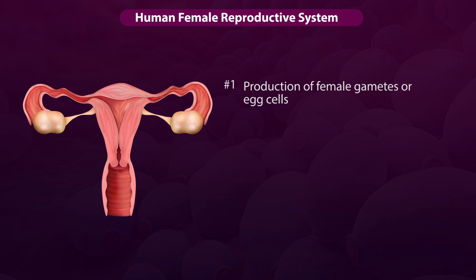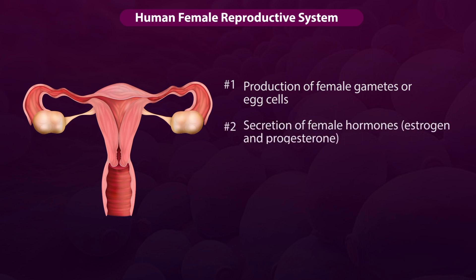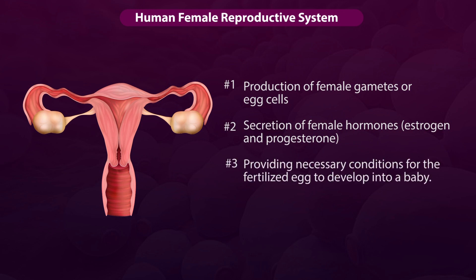1. Production of female gametes or egg cells. 2. Secretion of female hormones, that is estrogen and progesterone. 3. Providing necessary conditions for the fertilized egg to develop into a baby. 4. Menstruation.